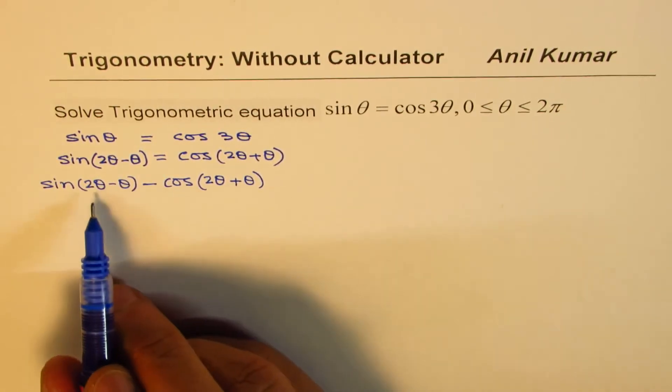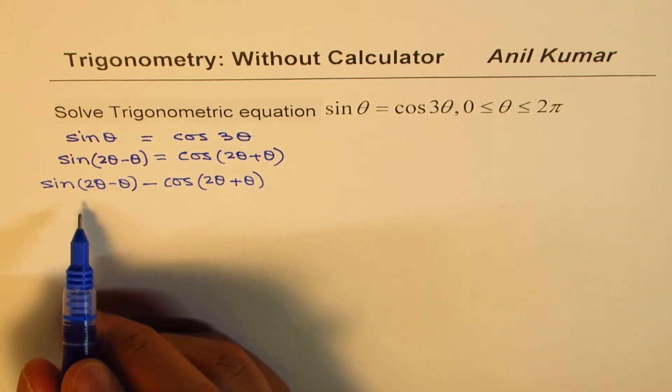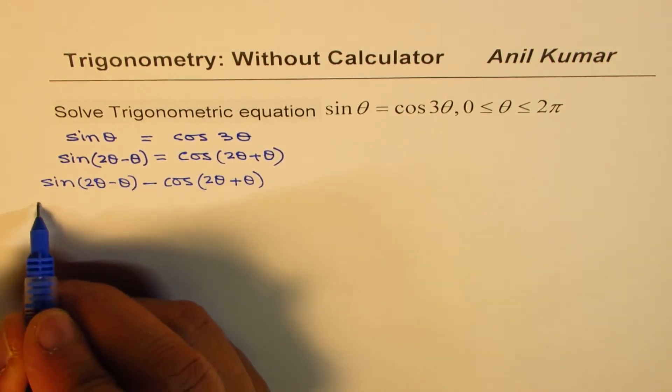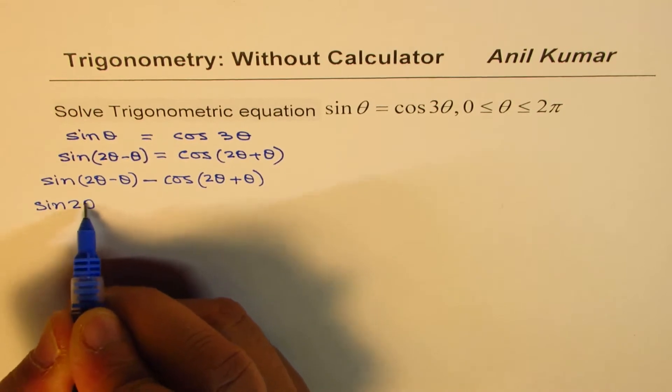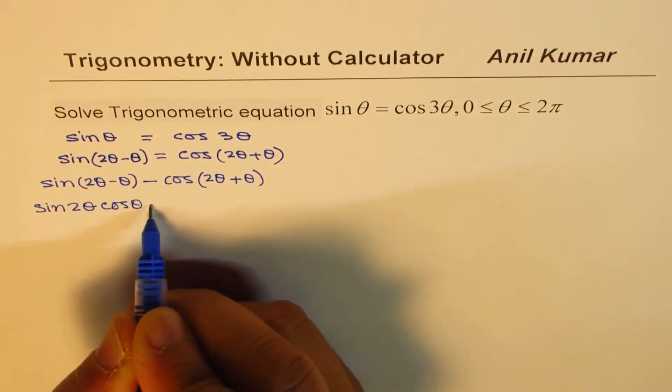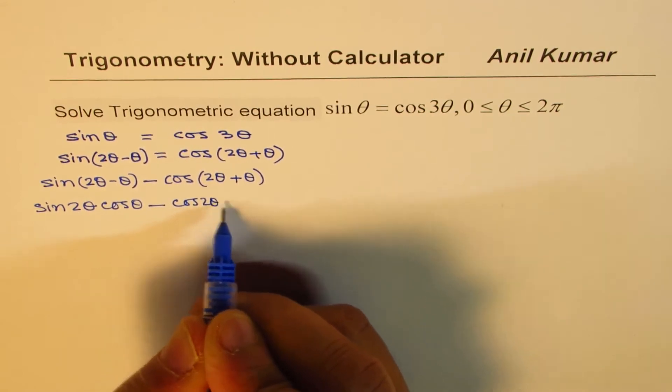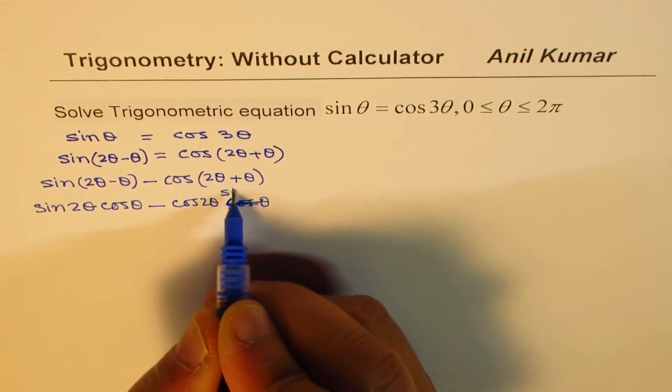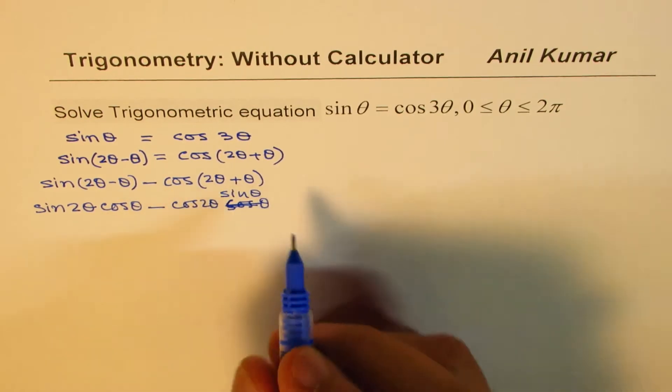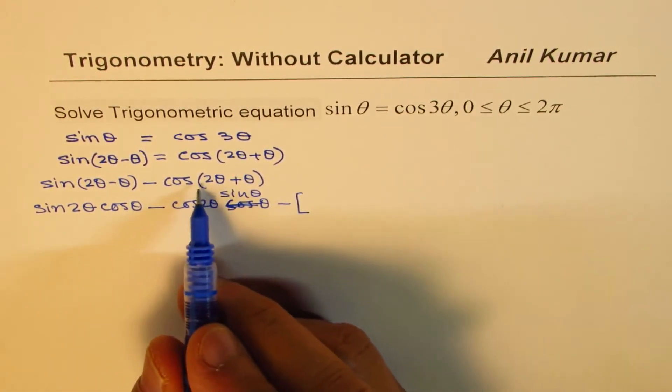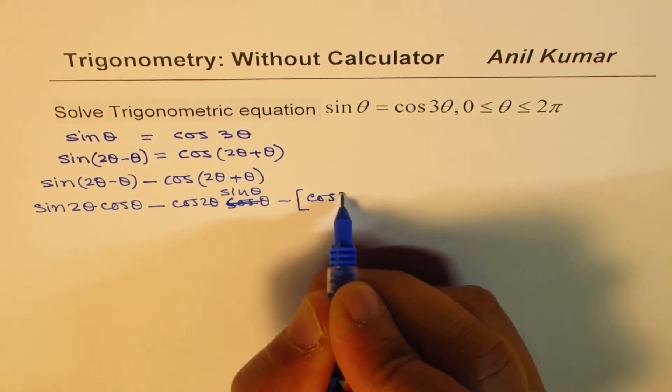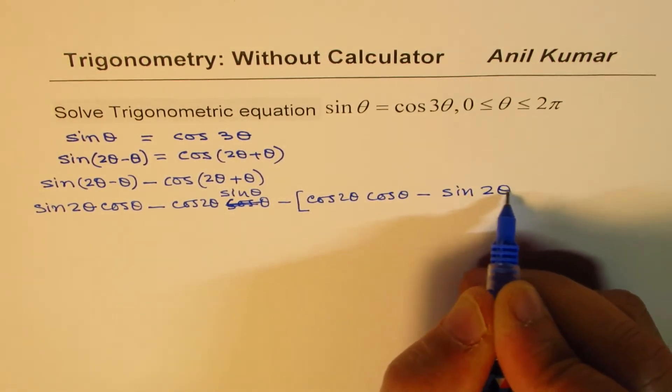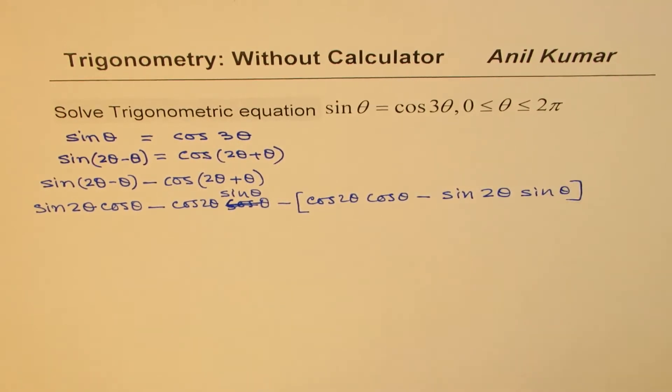So now we'll expand them using the compound angle formula. Sine A minus B is sine A cos B minus cos A sine B. So this could be written as sine 2 theta cos theta minus cos 2 theta sine theta. And cos A plus B gives us cos 2 theta cos theta minus sine 2 theta sin theta.